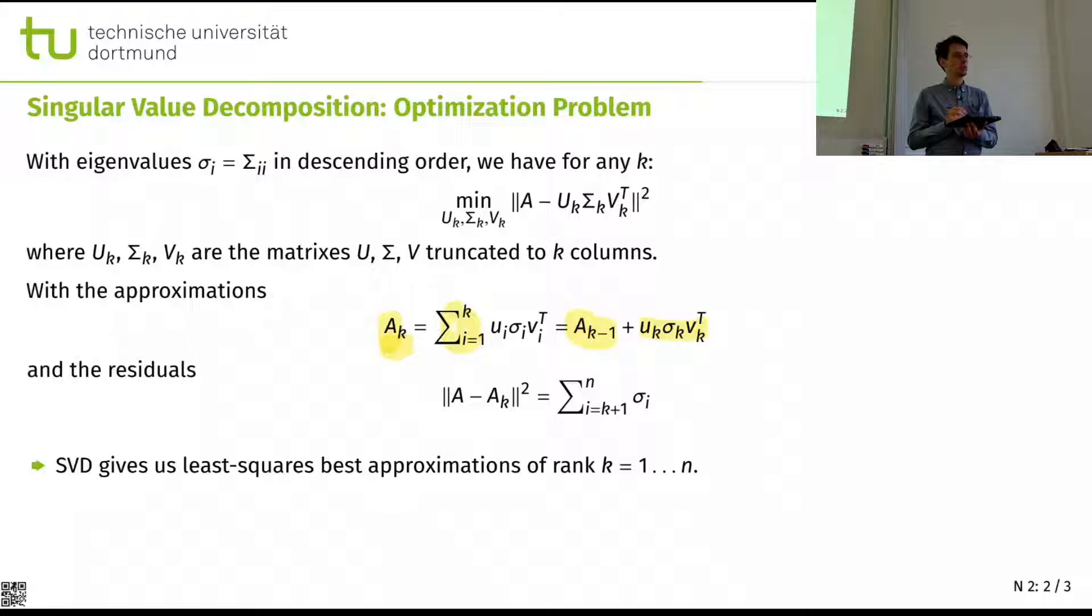And the residuals, our approximation error, there is probably a square missing in here. Now we have the squared eigenvalues in here. So there should be a square in here and in here and in here and probably in here. So in itself, it's consistent, but it is not an eigenvalue, but the squared eigenvalue that we have defined. So the residuals of our approximation error is based directly on these eigenvalues.